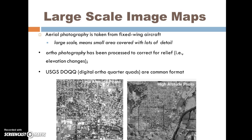Large-scale image maps are commonly taken from aerial photography using what we call fixed-wing aircraft. You'll remember the distinction between large and small scale — we're getting a relatively small area but lots of detail. Aerial orthophotography is an important concept because it corrects for relief, and we'll see an example of that in a moment. The USGS DOQQs are a common format that are widely available.